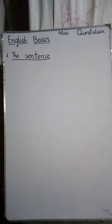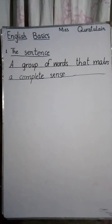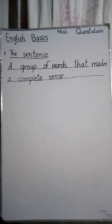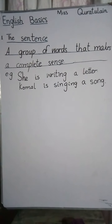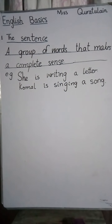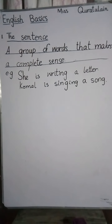Firstly, I'll define the sentence: a sentence is a group of words that makes a complete sense. Repeat it with me — a group of words that makes a complete sense. Whenever we write something, if our sentence is correct, our writing shows a good expression. For example, 'She is writing a letter' gives a complete sense, and 'Komal is singing a song' is another example — both are groups of words giving a complete sense.